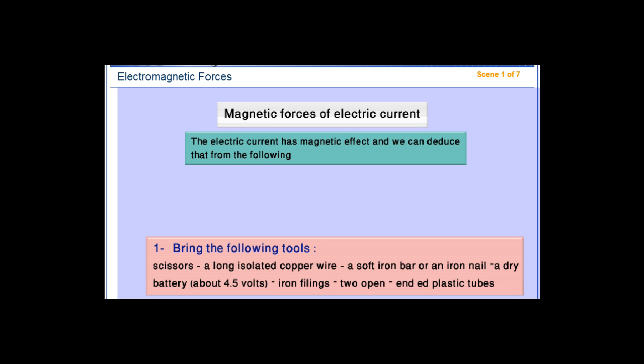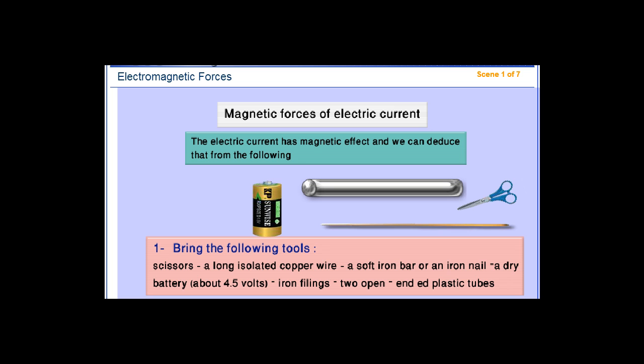Bring the following tools: scissors, a long isolated copper wire, a soft iron bar or an iron nail, a dry battery about 4.5 volts, iron fillings, and two open-ended plastic tubes.